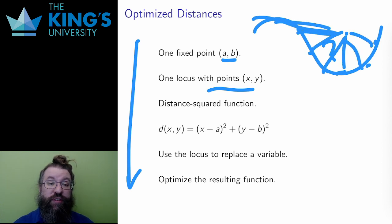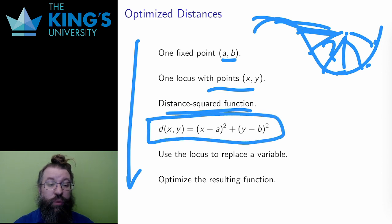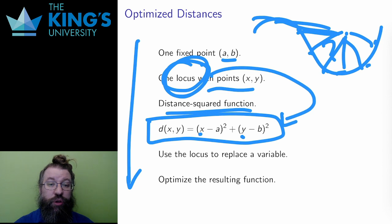I use the distance squared function which I have from the previous slide. d(x,y) is (x-a) squared plus (y-b) squared. Well, this has two unknowns. So, I need to do some setup to make this a single variable function. I use the equation of the locus to replace either x or y, turning d into a single variable function. And then I optimize that function using the normal min-max algorithm.